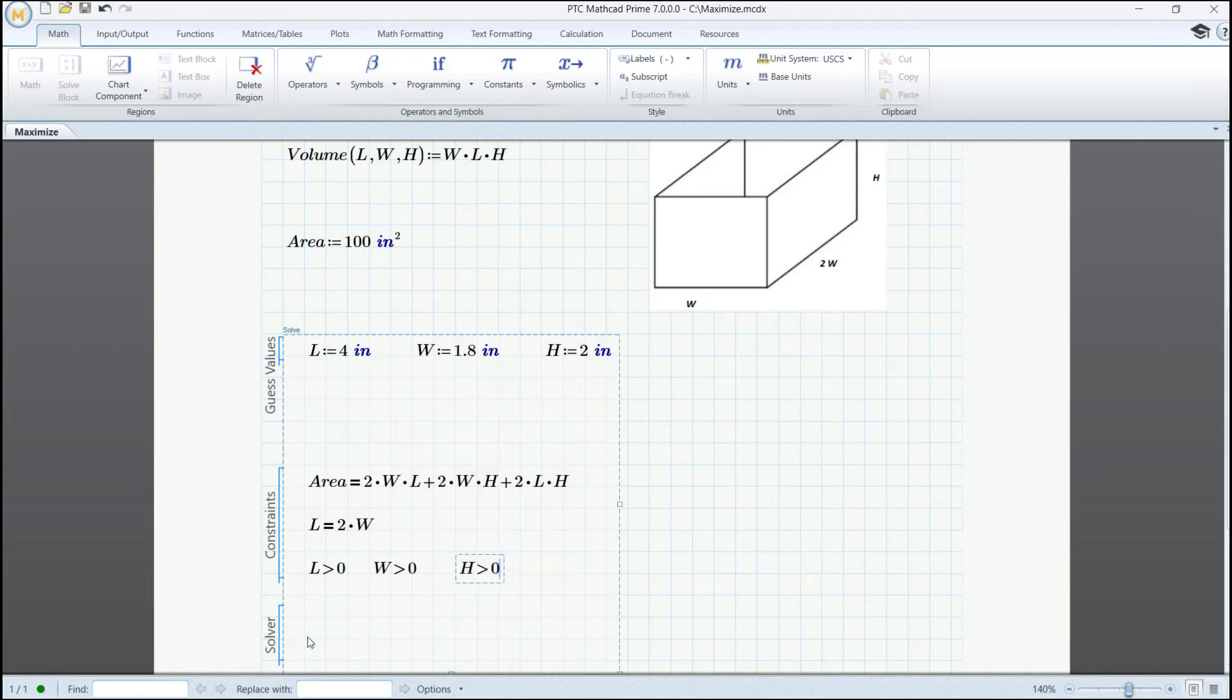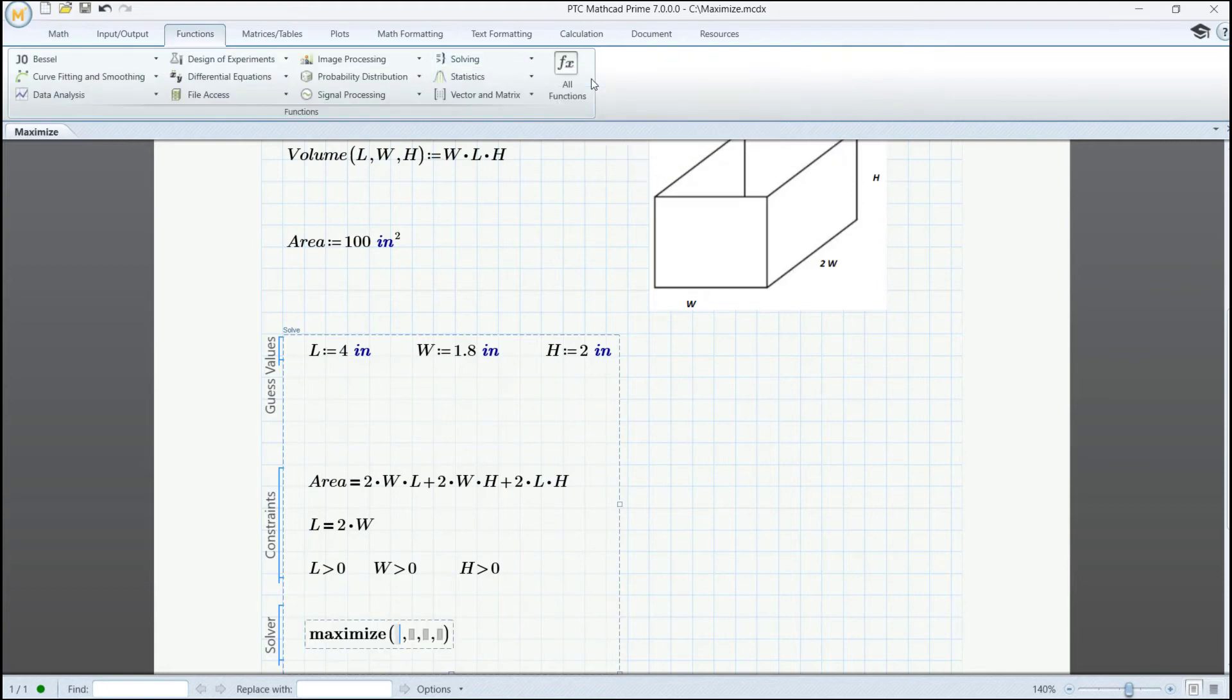And in the solve block part, we are going to use the maximize function. We insert it from the designated panel and here we are going to specify volume, length, width, and height. And when we press equal, we'll have a vector of our dimensions and we can even change the unit from feet to inches in order to see the values accordingly.